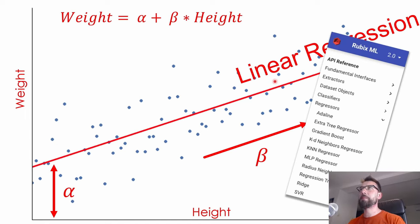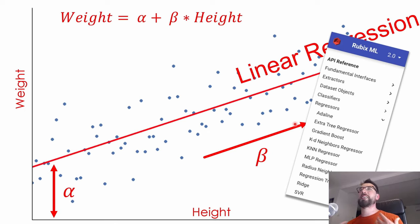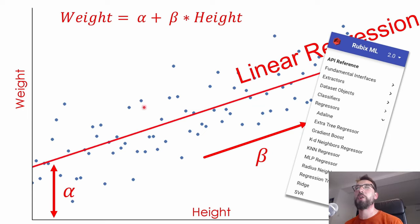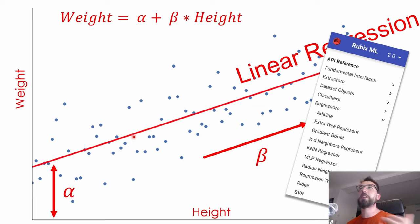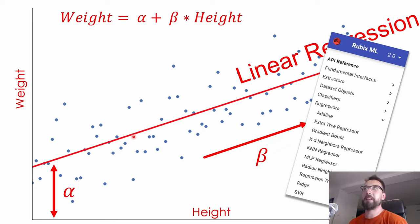Rubix ML has you covered with a bunch of regressors available. Regression is all about predicting a value based on some input data. You can make all kinds of predictions — for example, given the day of the week and previous days' visits, how many visits do we expect today? Or what would be next year's revenue? You put in as many features as possible, find a line that perfectly depicts the previous data, and based on that line you predict the future data. It's really powerful and a lot of stuff builds on that.